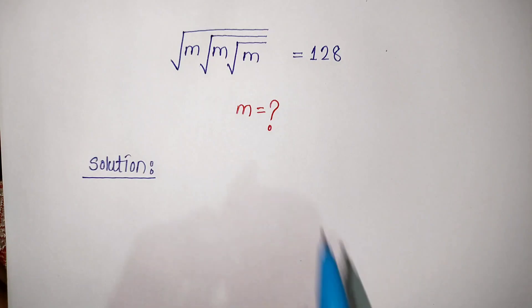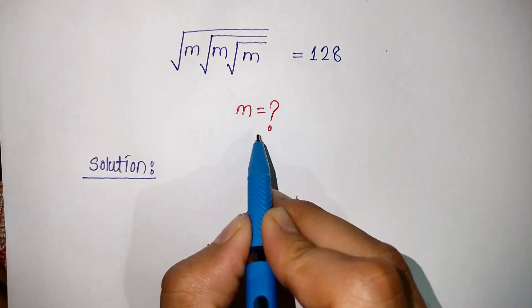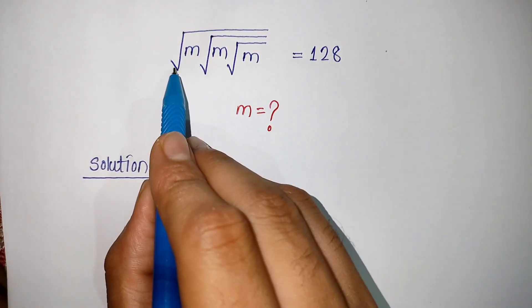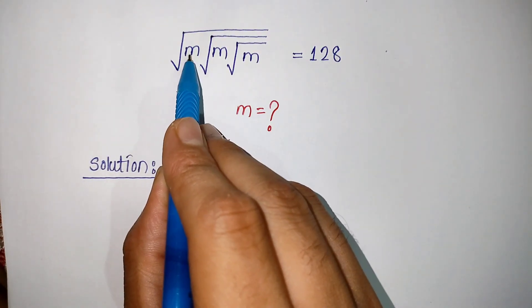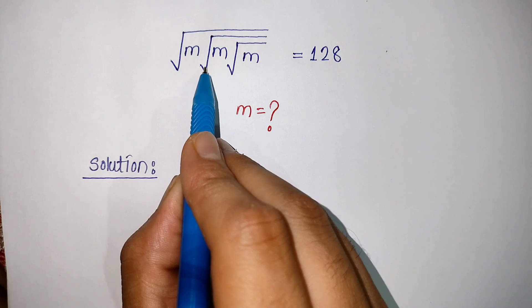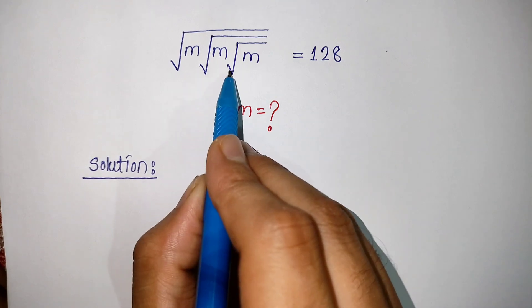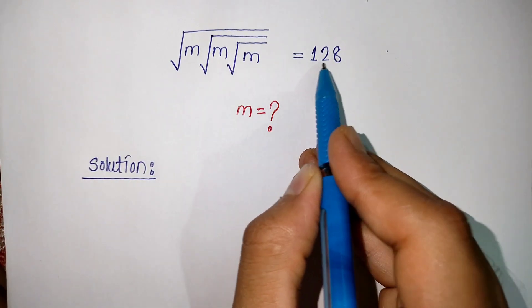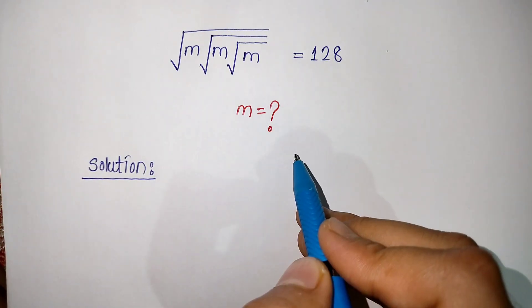Hello everyone. In this video we have to find the value of M, where the question is: under root of M into under root of M into under root of M is equal to 128.